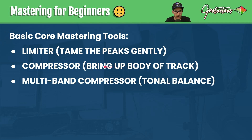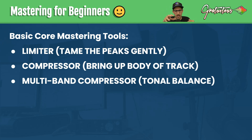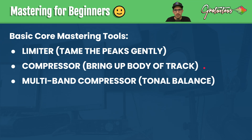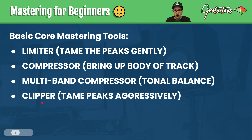We also have a multi-band compressor, which allows you to do tonal balance. You can create different bands — for the low lows, mid lows, mid highs, and the highs, or even just three bands. These can each compress differently and balance out your track in a nice transparent way. You can get more compression, more loudness, and just a more balanced track. There is also a clipper.